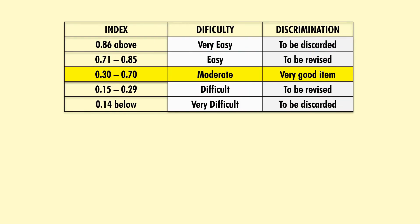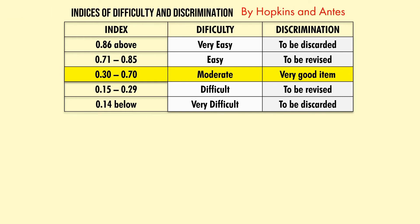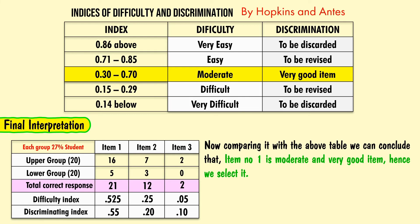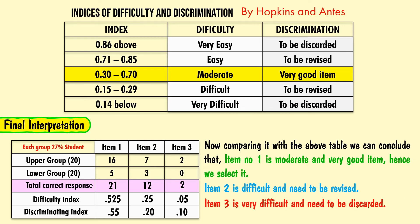To balance between difficulty index and discrimination index, we follow the table as proposed by Hopkins and Antez. Final interpretation: item number 1 is a moderate and very good item — select it. Item number 2 is difficult and needs to be revised. Item number 3 is very difficult and needs to be discarded.